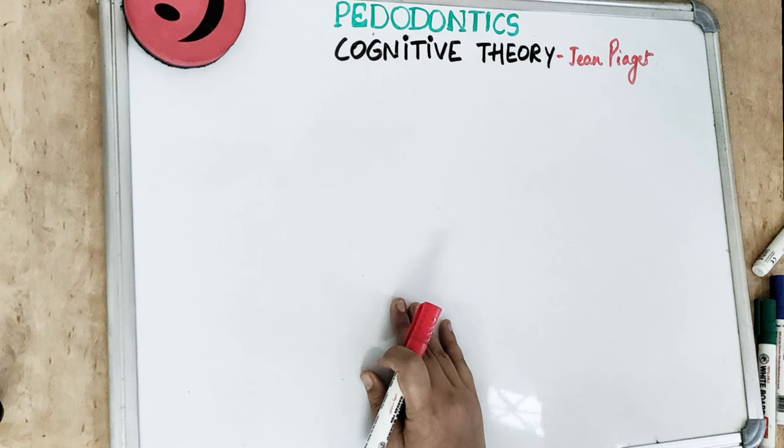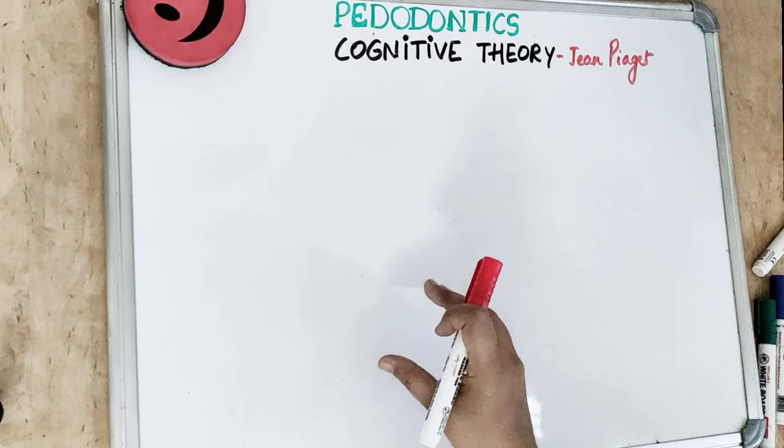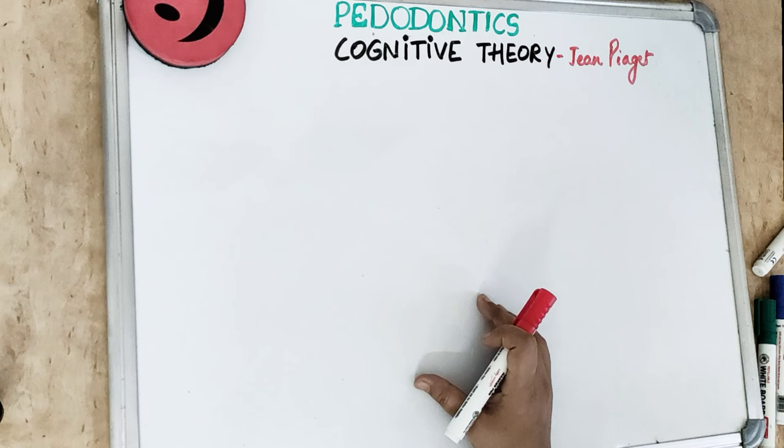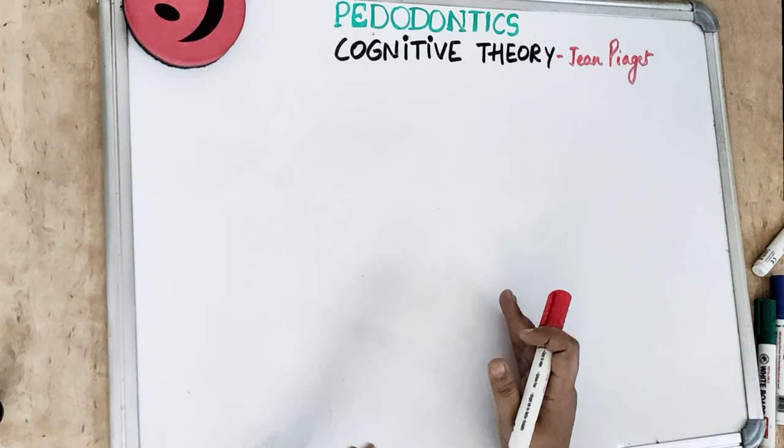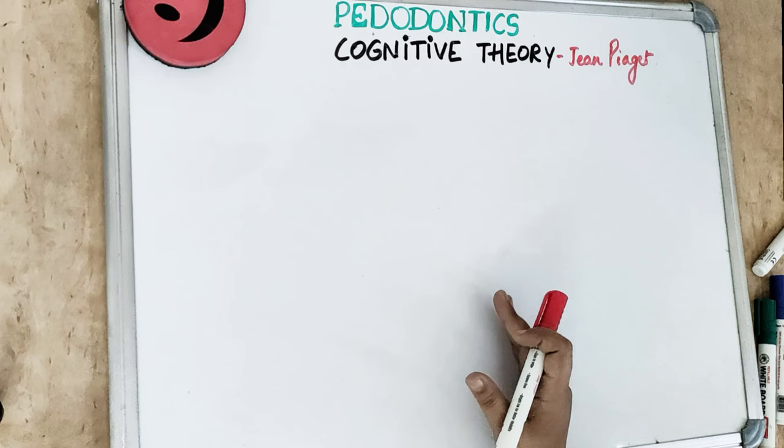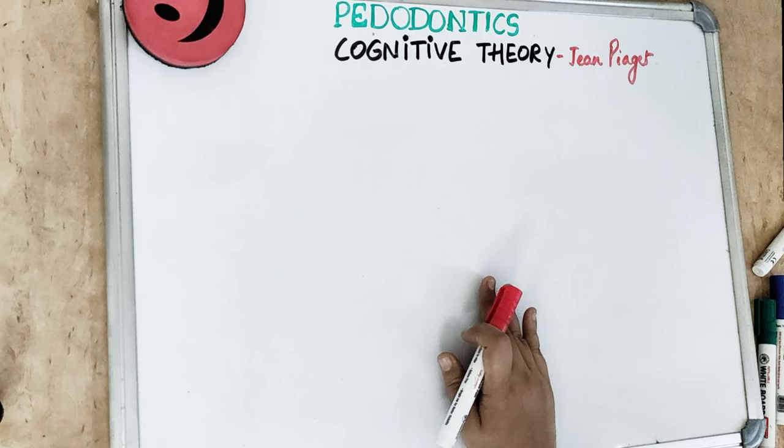Jean Piaget derived this theory from direct observation — by directly observing children and questioning their thinking process. He said that the environment does not change the child's behavior. Instead, the child seeks to understand the environment and learn from it. Piaget formulated this hypothesis on how children and adults think and acquire their knowledge.